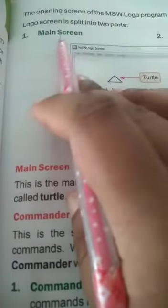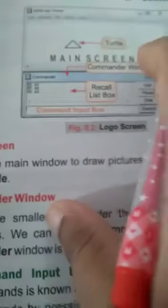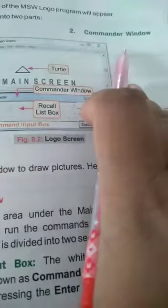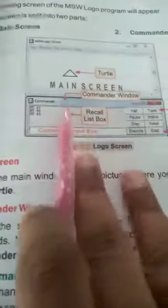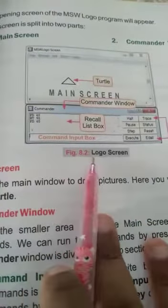Page number 73. The opening screen of the MSW Logo program will appear. Logo screen is split into two parts. First one is main screen, second one is commander window. See this, figure 8.2: Logo screen.